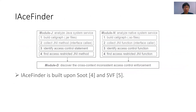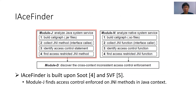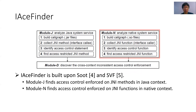We designed and developed IAceFinder, which analyzes both Java system services and native system services to discover cross-context inconsistencies. IAceFinder has three modules, and its architecture is presented in the slide. Module J is built on Soot, and it analyzes Java system services to associate access control enforcing their remote interfaces to JNI methods. Module N is built on SVF and analyzes native system services to correlate the access control enforcing their remote interfaces to JNI functions. Module D contrasts the access control on corresponding JNI methods and JNI functions to uncover cross-context inconsistencies.